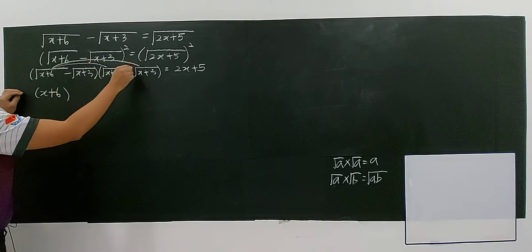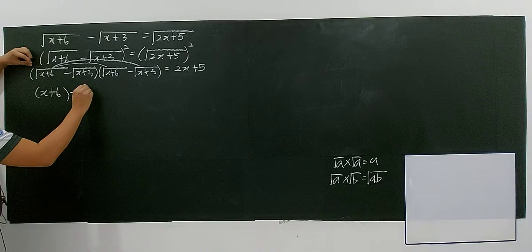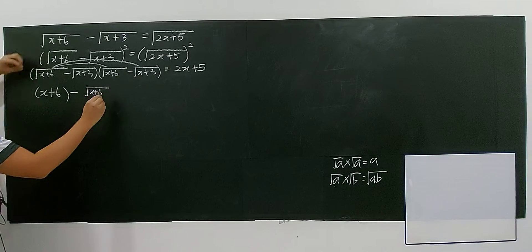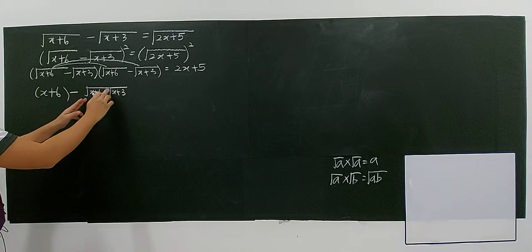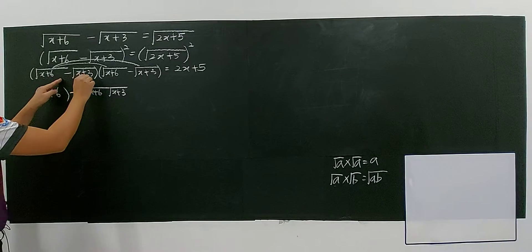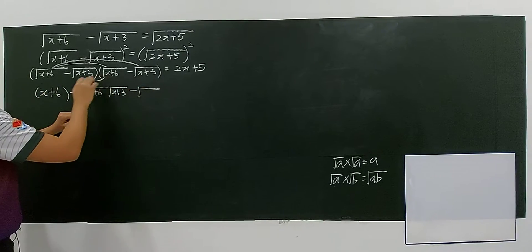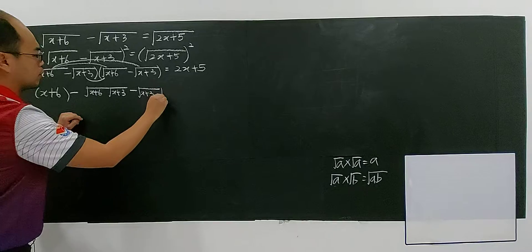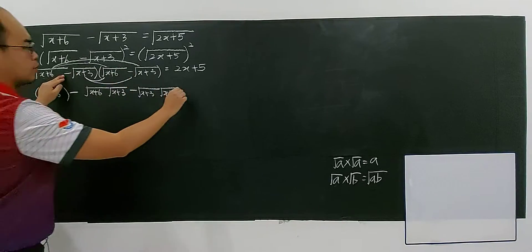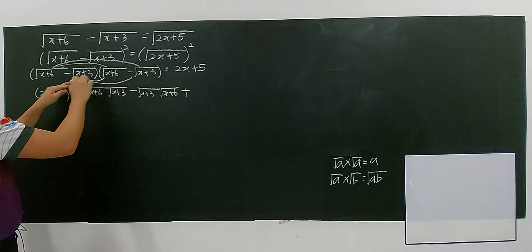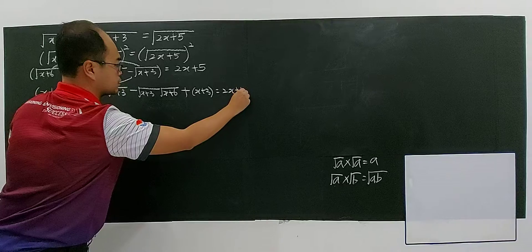The expansion gives: positive (x+6), then negative square root of (x+6) times square root of (x+3), then another negative square root of (x+3) times square root of (x+6) — which is the same term — and finally, negative times negative gives positive (x+3). This all equals 2x plus 5.